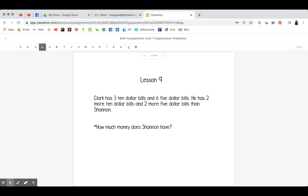So Clark has three $10 bills. Okay, that's $30, right? $10, $20, $30.